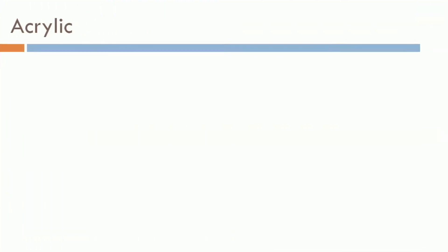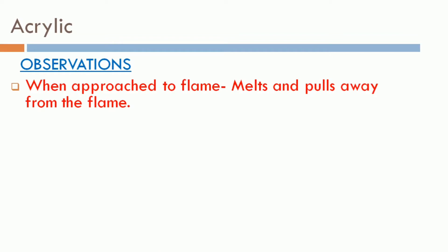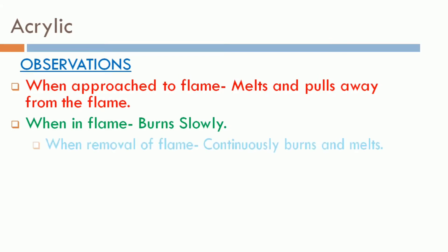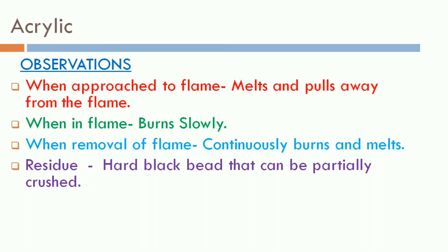Next, acrylic fiber. Observations of burning: when approached to the flame, it melts and pulls away from the flame. When in the flame, it burns slowly. When removed from the flame, it continuously burns and melts. The residue is a hard black bead that can be partially crushed. The odor is a chemical burning smell.